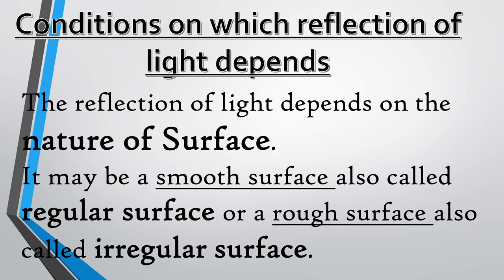Now let us learn a few conditions on which reflection of light depends. The reflection of light depends on the nature of the surface. It may be a smooth surface, also called a regular surface, or a rough surface, also called an irregular surface.